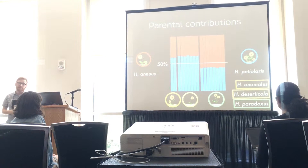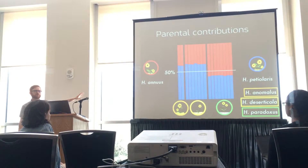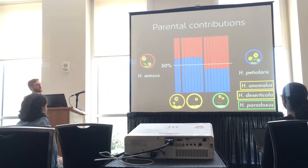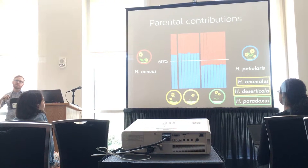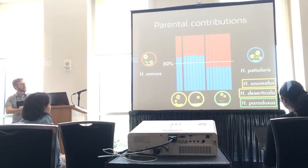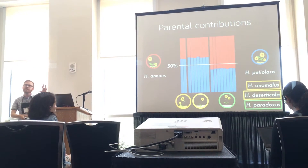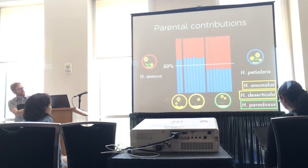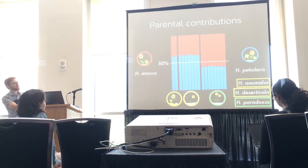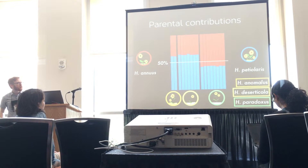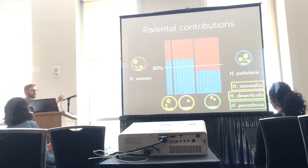I used transcriptomic data for the hybrid species and their parents. In this analysis, I looked for alleles that show fixed differences between the parents, and for each hybrid individual, determined which parental alleles they carry. You can see that they are relatively evenly matched to the parents: anomalus and desicola are about 60% petiolaris, and paradoxus is about 55% petiolaris, so there are slight biases but overall they're fairly balanced.